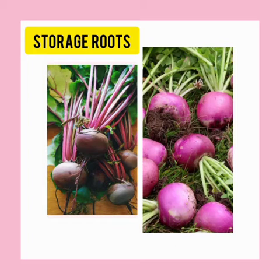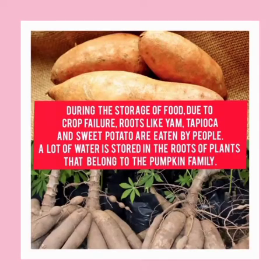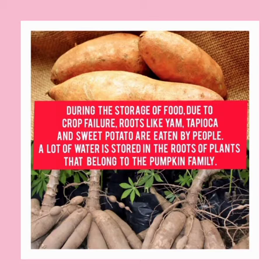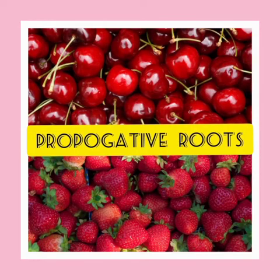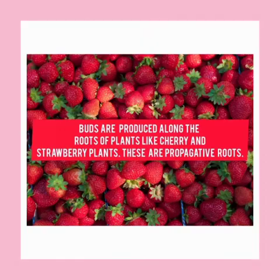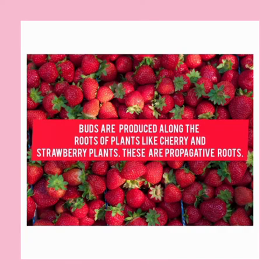Storage roots: extra food made by the plant is stored in the roots of some plants as starch. For example, beetroot and turnip. During crop failure, storage roots like yam, tapioca, and sweet potato are eaten by people. A lot of water is also stored in the roots of plants that belong to the pumpkin family.